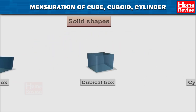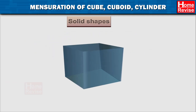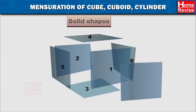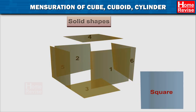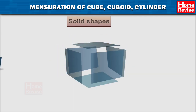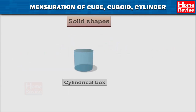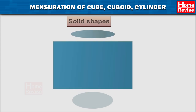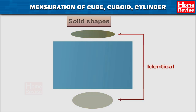In a cubical box, all six faces are square and identical. In a cylindrical box, there is one curved surface and two circular faces which are identical.